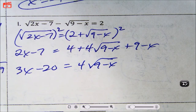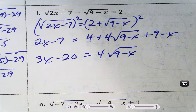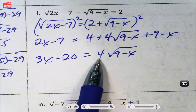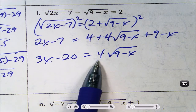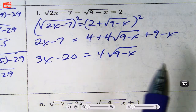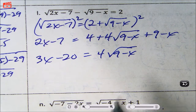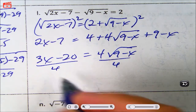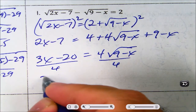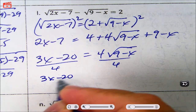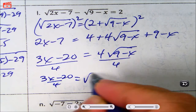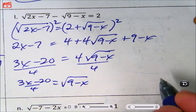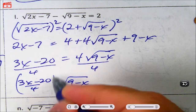Now, up to this point I've been telling you to isolate the radical, but you actually don't have to divide by 4. However, let's go ahead and divide by 4 to avoid confusion. So that's going to be (3x minus 20) over 4 equals the square root of 9 minus x. Now I square both sides again.